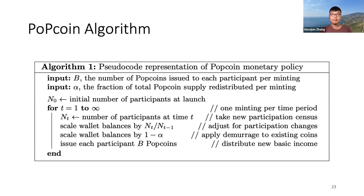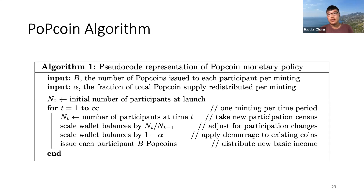The algorithm takes two system parameters as inputs: B — the number of PopCoins issued to each participant per meeting — and alpha, the demurrage rate. The algorithm then takes an infinite loop, distributes the basic income, and adjusts the balance according to the demurrage rate and the number of participants. With this procedure it would be easy to translate it into a real computer program executable by the blockchain.